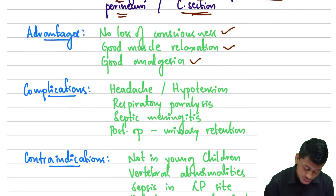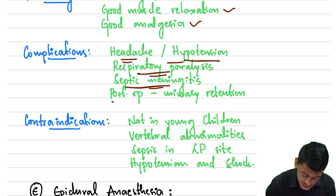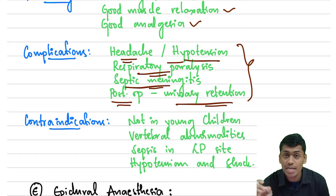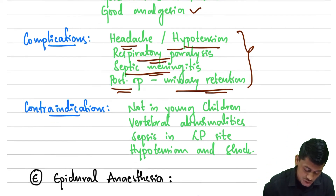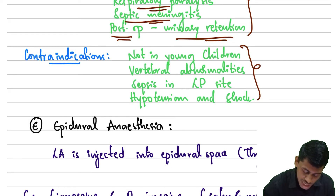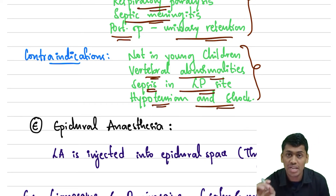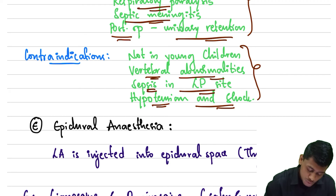Complications of spinal anesthesia include headache, hypotension, respiratory paralysis, septic meningitis, and post-operative urinary retention. Contraindications include young children who may not be cooperative, vertebral abnormalities, sepsis at the lumbar puncture site, and hypotension or shock.